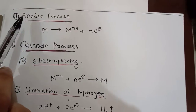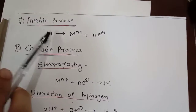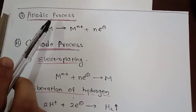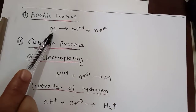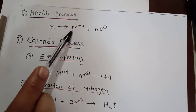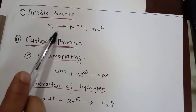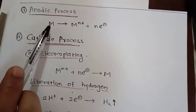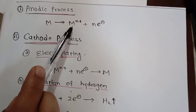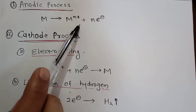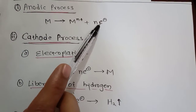At anode, the oxidation reaction will take place. The metal will convert to M(N+) and N electrons. The metal from zero oxidation state will oxidize to M(N+) and generate the same number of electrons.